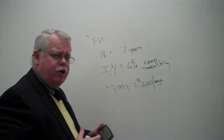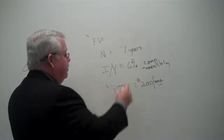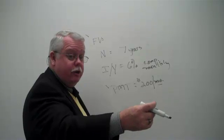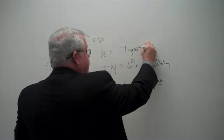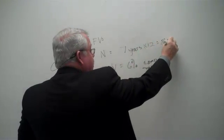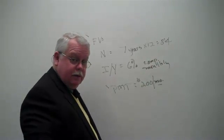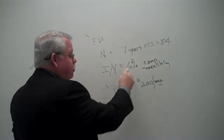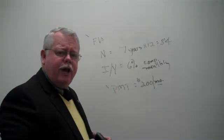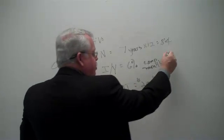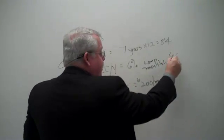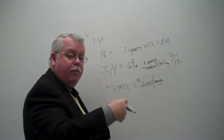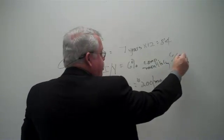How do we make our changes? If it's going to compound 12 times a year, right? N becomes 7 times 12, 84, right? And if I'm going to earn interest at 6% per year, how much is that per month? It's the annual rate divided by the number of compounding periods in the year, which is a half a percent.